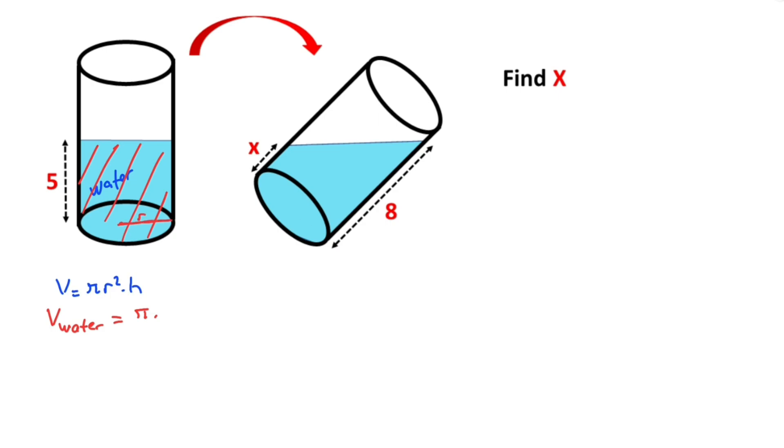Here is radius, and here is also radius. So pi times r squared times height is 5. So volume of the water must be equal pi r squared.